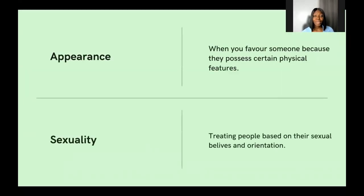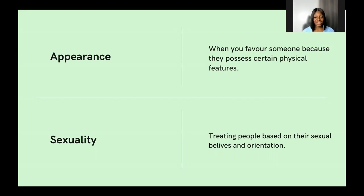Appearance bias is where we favor people based on their physical appearance and beauty standards we're comfortable with — preferring someone taller over shorter, or thinner over heavier. Sexuality bias is where we treat people based on their sexual beliefs and orientation. Many people in open source don't own up to their sexuality in communities because of unfair treatment they've experienced in the past, and they don't want to repeat those experiences.